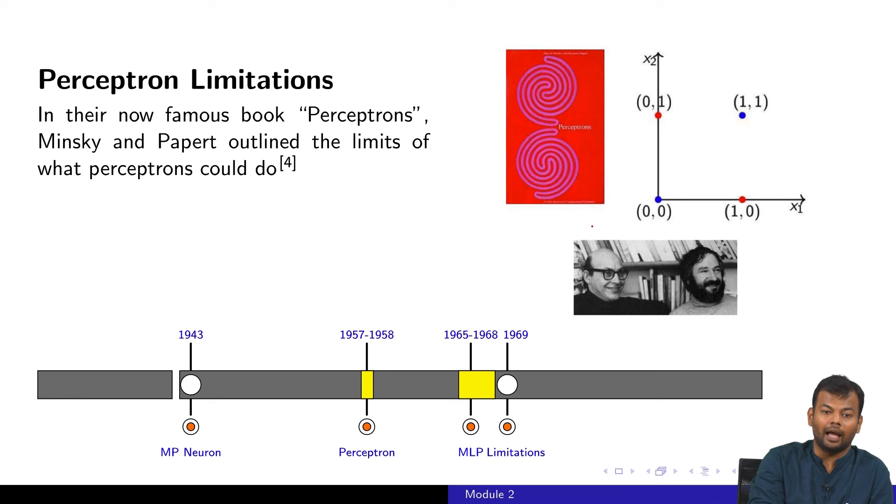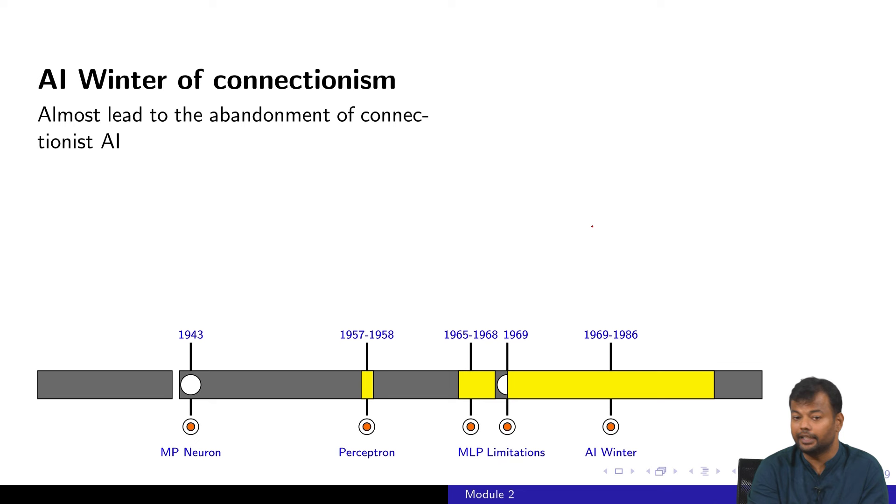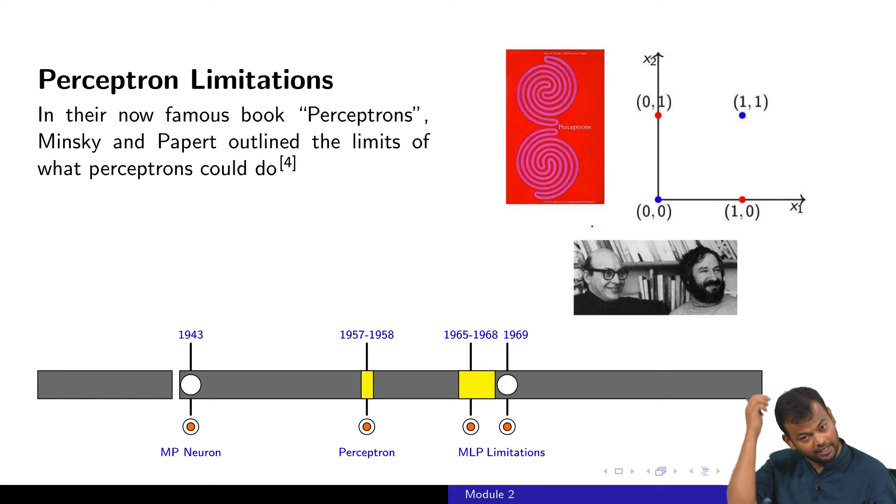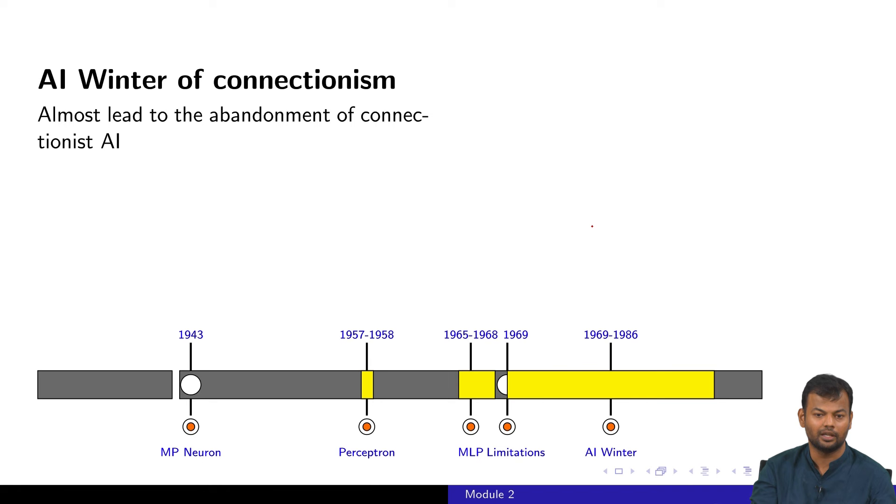This led to severe criticism for AI and people started losing interest. A lot of government funding subsided after 1969 all the way to 1986. This was the AI winter of connectionism. There are two types of AI: symbolic AI and connectionist AI. Whatever we are going to study in this course about neural networks falls in the connectionist AI paradigm. There was no interest in this, it was hard to get funding for these 17 to 18 years, largely triggered by the Minsky and Papert study. Interestingly they were often misquoted. They said a single perceptron cannot do it, but they also said a multilayer network of perceptrons can do it, but no one focused on the second part.